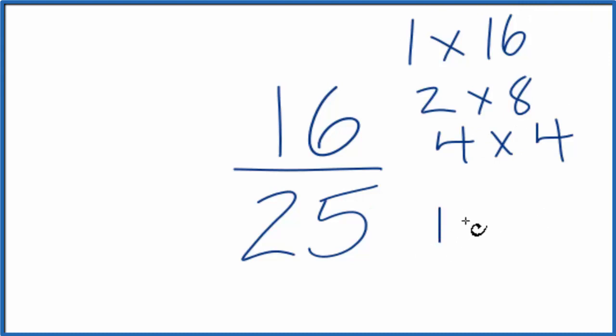For 25, we have one times 25. Five times five. And that's it. Those are the factors. So if you're trying to find a common factor for both 16 and 25, even though it seems like there should be one, the only common factor is one.